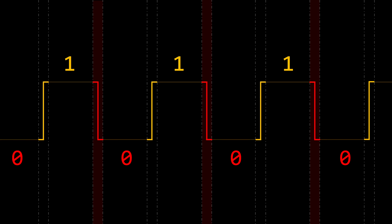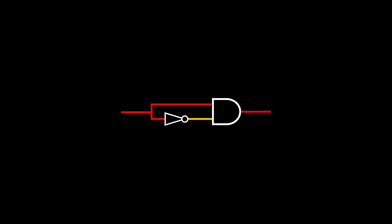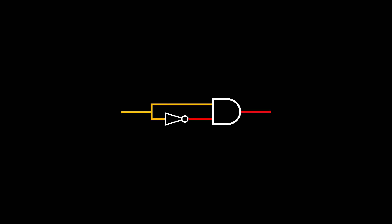But edges are different — we can build circuits that detect them. At first glance, you might think this circuit always outputs 0. An AND gate only outputs 1 if both inputs are 1, but since both inputs come from the same source and one is negated, it seems impossible for both inputs to be 1 simultaneously.